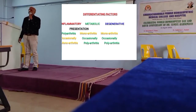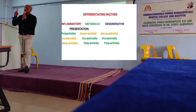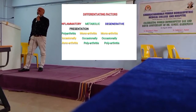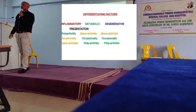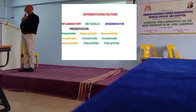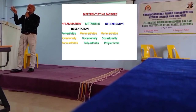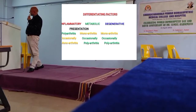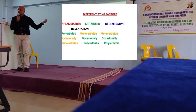Weight-bearing joints get affected in degenerative arthritis - primarily the knees and hips. One more joint that can get osteoarthritis is the first metacarpophalangeal joint, because we use that joint repeatedly and often. Osteoarthritis of the thumb is quite common nowadays because we use it so frequently. So this is the presentation of degenerative arthritis.